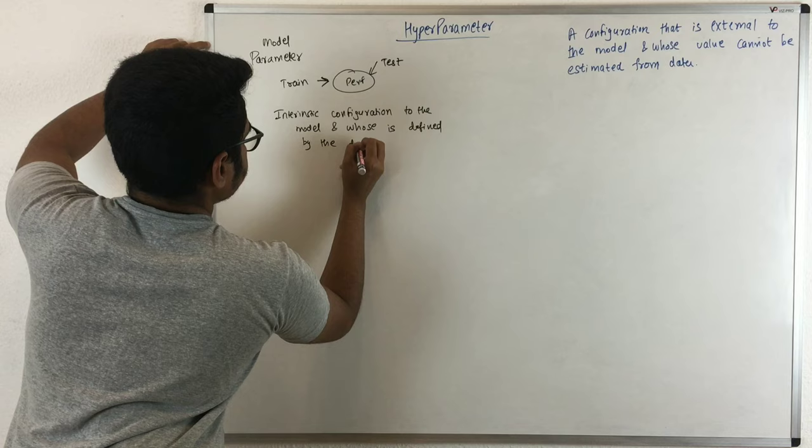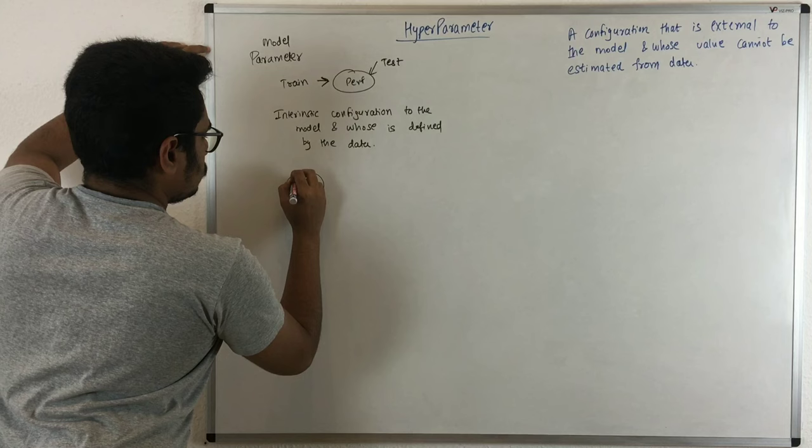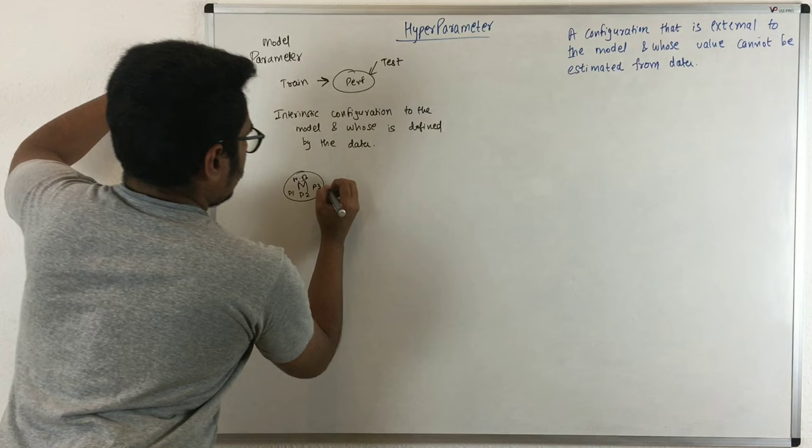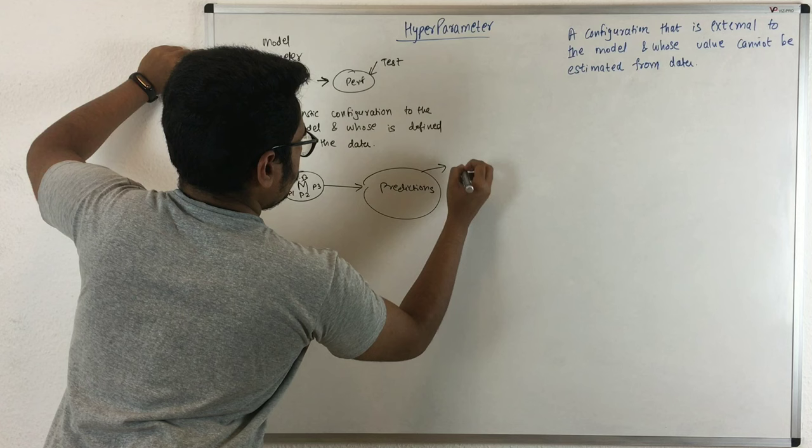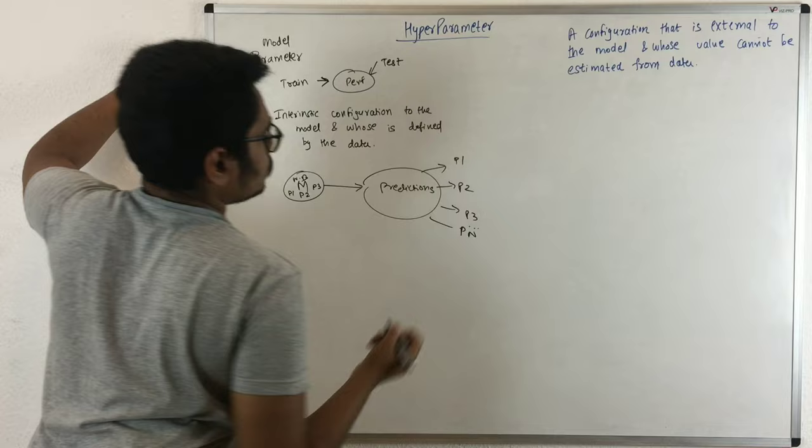What this means is, say you have a model like Naive Bayes with three parameters P1, P2, P3, and it makes predictions. The predictions could be prediction 1, prediction 2, prediction 3, or prediction n - creating n number of predictions based upon the values it gets.